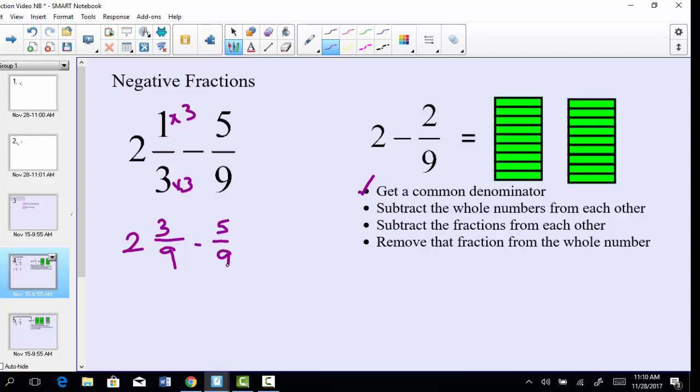Now the problem is the first fraction right here, 2 and 3/9, the 3 is less than the 5. That's the part that always throws people off, but we can deal with that just fine. What we can say is we'll bring down our whole number 2. So that comes straight down, and we say to ourselves, what is 3 minus 5? 3 minus 5 is negative 2, and then we just carry over our denominator 9ths. So it's 2 minus 2/9.